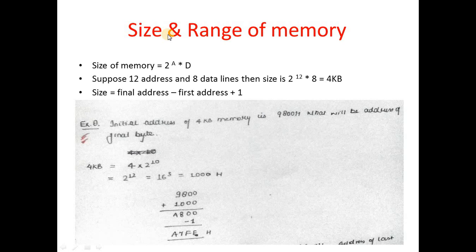Next: size and range of memory. The size of memory formula is 2^a × d, where a is the number of address lines and d is the number of data lines. For example, 12 address lines and 8 data lines gives 4KB. Reference: 2^10 = K, 2^20 = M, 2^30 = G, 2^40 = T (tera). So 2^12 × 8 bits = 4096 × 8 bits = 4KB.